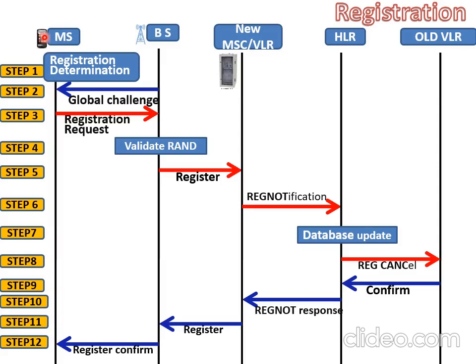If it is a successful registration message, the base station passes the information and sends a registration confirmation message to the mobile station. The mobile station is now registered in location area 3. Previously it was in location area 1, and it has moved to location area 3. These are the 12 steps involved in mobile registration.